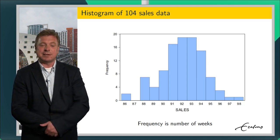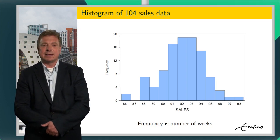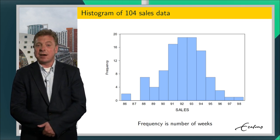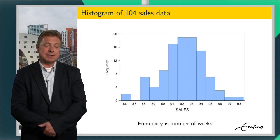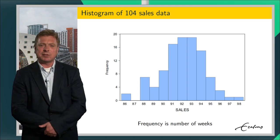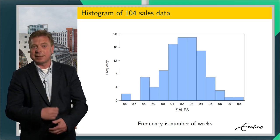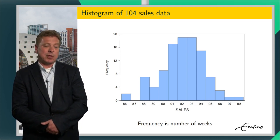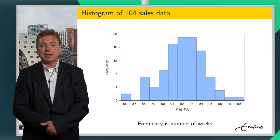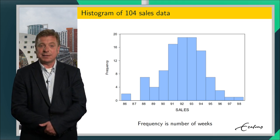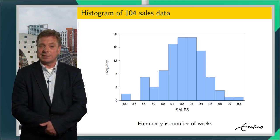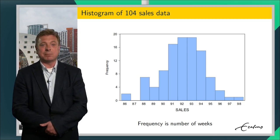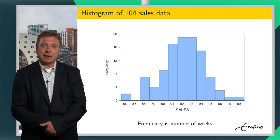Turnover is sales times price. In our example we have two years of weekly data, that is 104 observations on sales and prices. The histogram of the sales data shows that the majority of weekly sales is somewhere between 90 and 95 units, with a minimum of 86 and a maximum of 98. Sales of 92 and 93 units are most often observed, each 19 times.